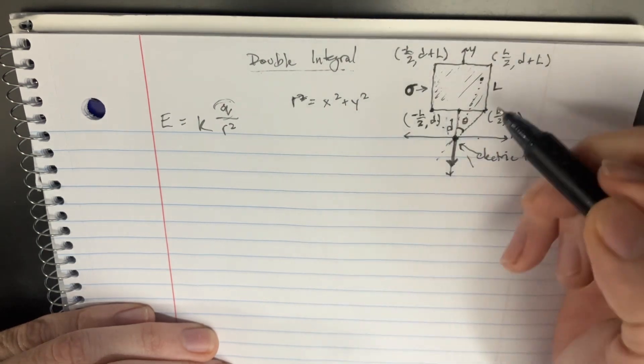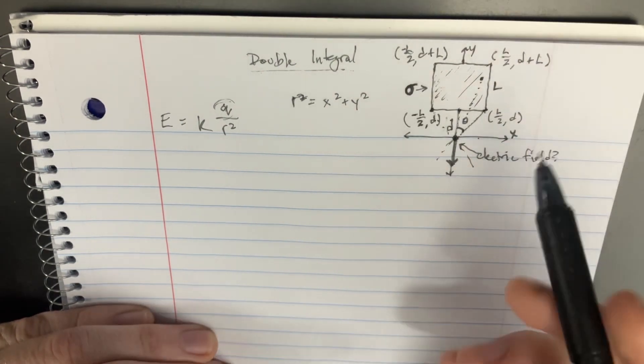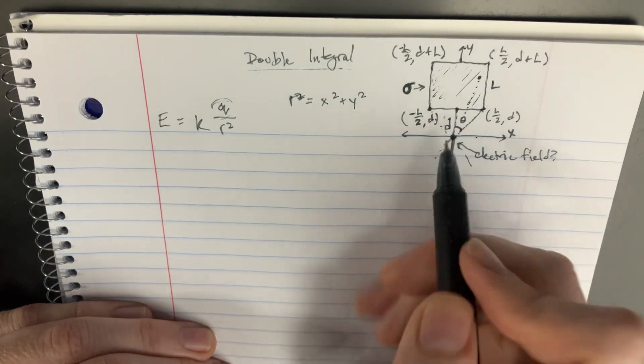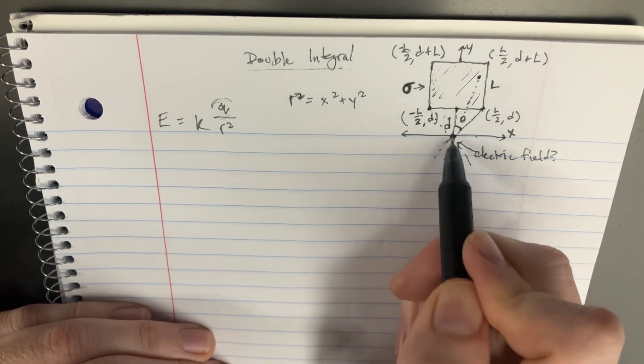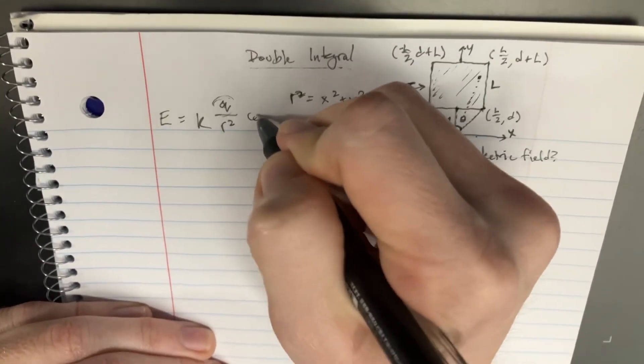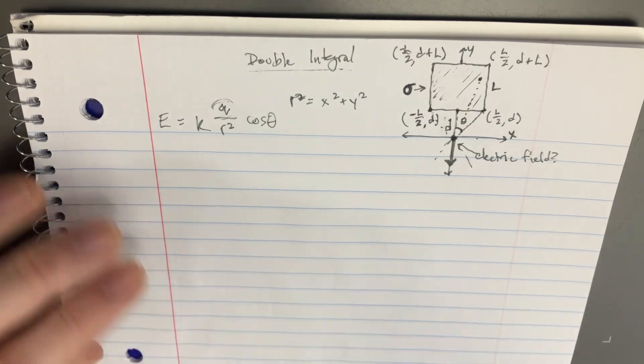But as far as the angle here, you can look at it from this perspective. This would be the cosine of the theta. Even though it's in the y direction, it's cosine of theta. So cosine theta.